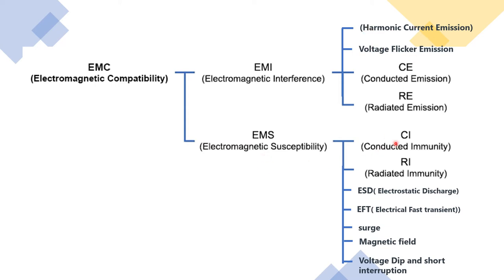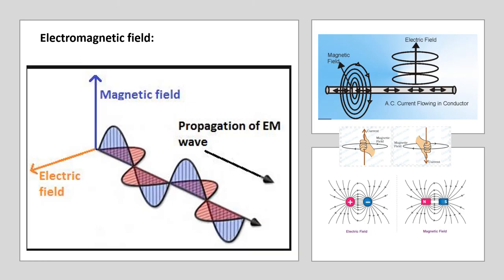For susceptibility, there is conducted immunity — the device should be immune to interference conducted through wires — as well as radiated immunity, ESD (electrostatic discharge), EFT (electrical fast transient), surge, magnetic field, and voltage dip and short interruption. Today I will cover electromagnetic interference and these four emission topics. The next video will cover conducted immunity, radiated immunity, ESD, EFT, surge, magnetic field, and voltage dip and short interruption.